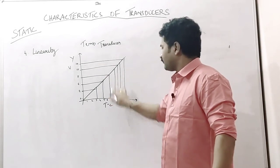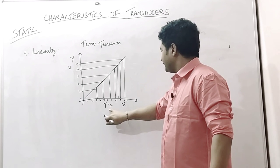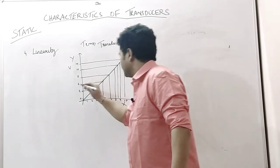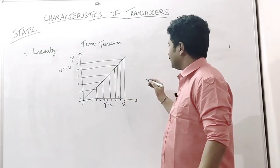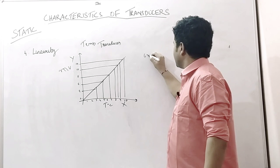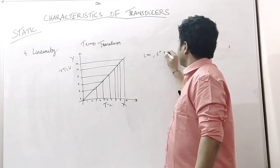Let us take one example. For 5 degree Celsius, this is in millivolt. For 5 degree Celsius, we get 6 millivolt.